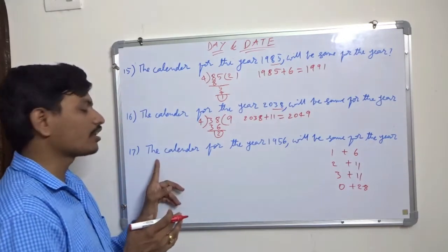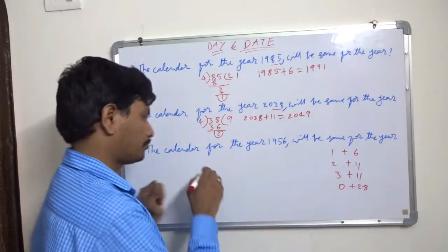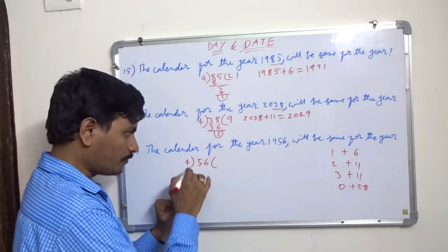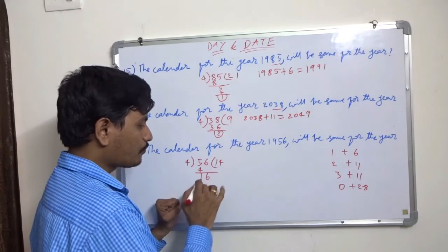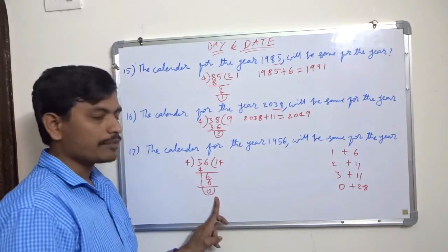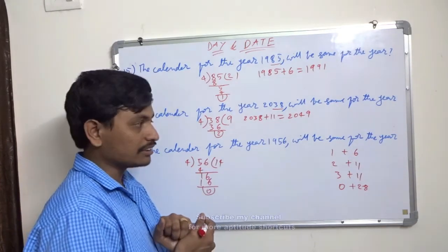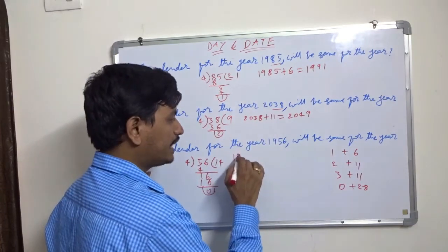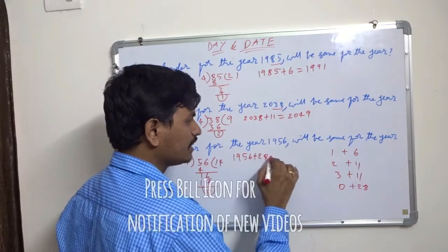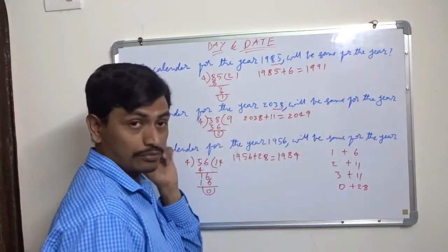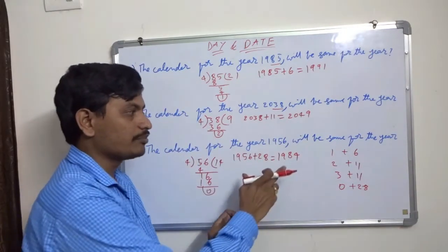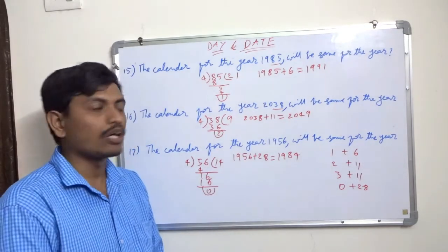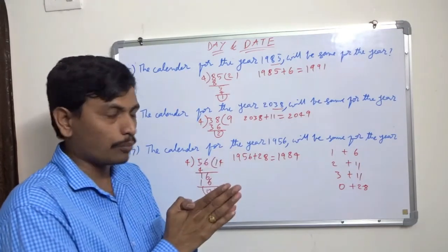Last question: the calendar for 1956 will be same for which year? Last two digits: 56 divided by 4 — 4 × 14 = 56, remainder is 0. Remainder 0 means 1956 is a leap year. Leap years repeat only after 28 years, not within that cycle. So 1956 + 28 = 1984. The calendar for 1956 will repeat in 1984 only. This covers all types of calendar and day-date problems.